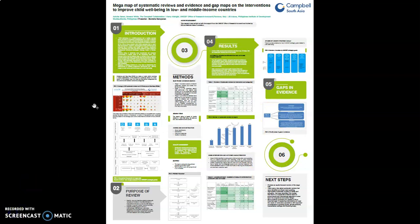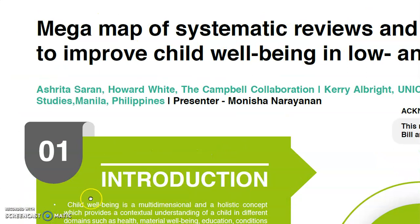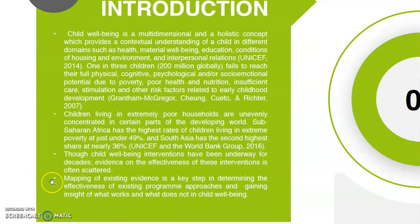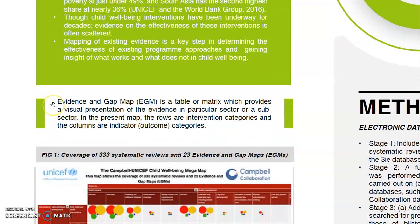Let us begin with a brief introduction. After UNICEF's definition of 2014, child well-being is a multi-dimensional and holistic concept. Research evidence shows that one in three children, i.e. 200 million globally, fail to reach their full potential due to risk factors related to early childhood development. Mapping of existing evidence is a key step in determining what works and what does not work for child well-being.